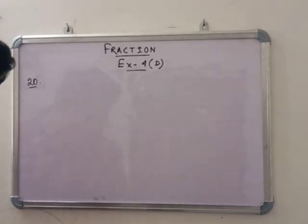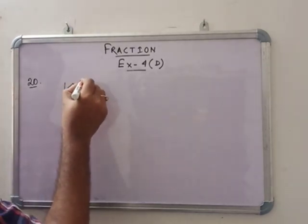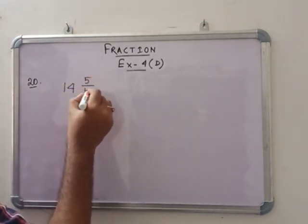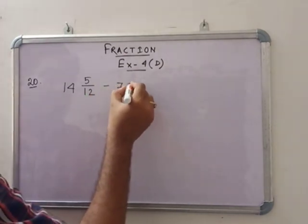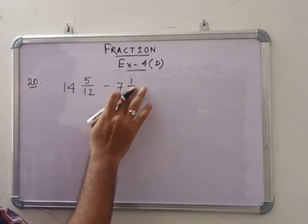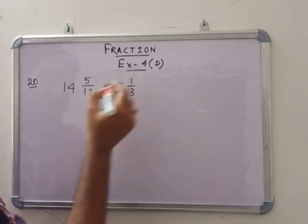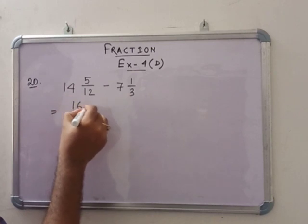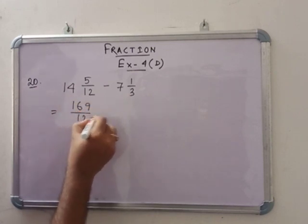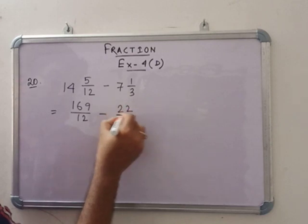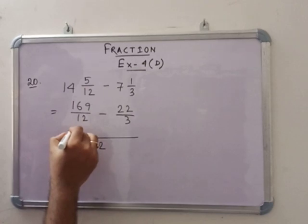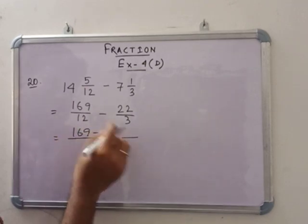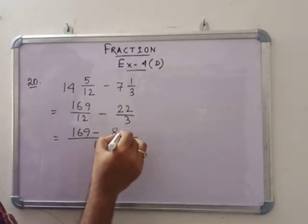So in number 20, see that: the sum of two fractions is 14 and 5 by 12. One of them is given, 7 and 1 by 3. Then you have to find the other. Sorry, this is 3. So that means this is 169 by 12 minus 22 by 3. So that means 12, so 169 minus 88.